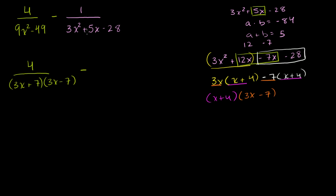So that's what this guy over here will factor into. So I can rewrite it right here. So this expression is the exact same thing as 1 over 3x minus 7 times x plus 4. This and this is the exact same statement.